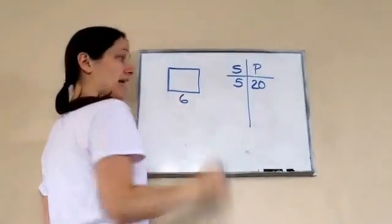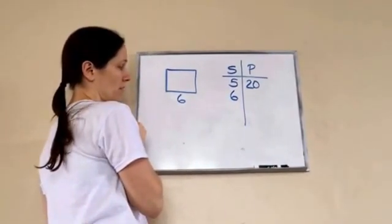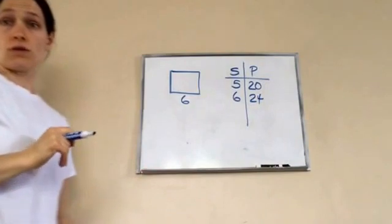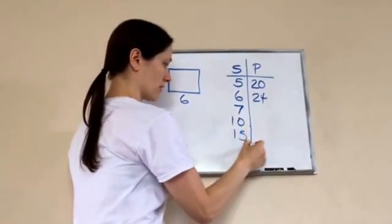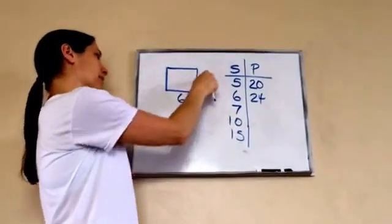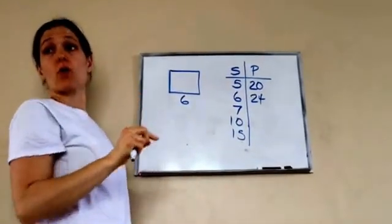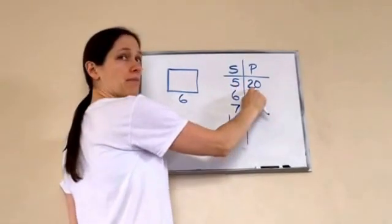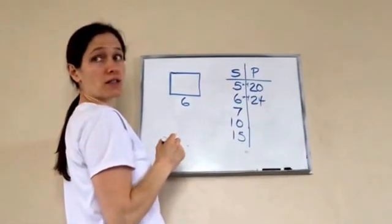So I'm going to write down an equation — S on one side, P on the other. The S stands for side and the P stands for perimeter. If my S was a 5, then what was my perimeter? 20. If my S was a 6, then what would my perimeter be? 6 times 4, which would be 24. Very good. Now, what do you notice is happening from 5 to 20? Times 4. From 6 to 24? Times 4. So our function is times 4.